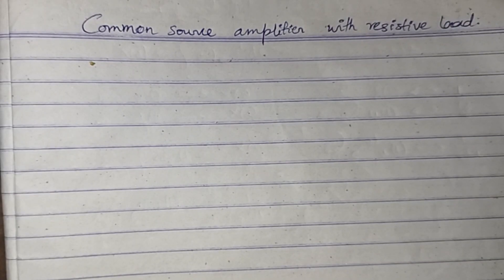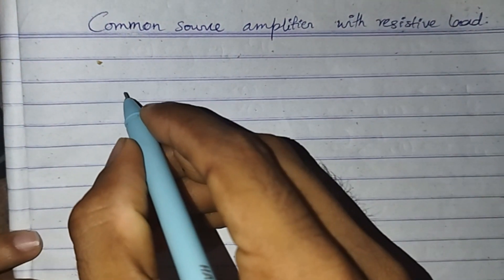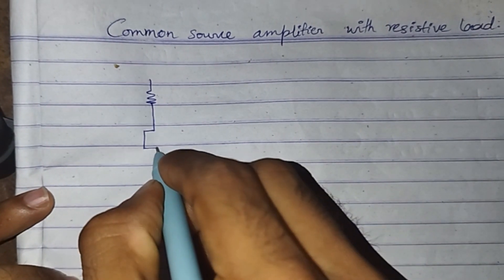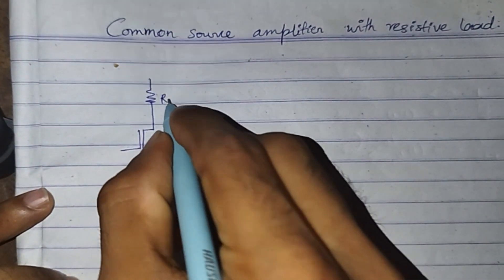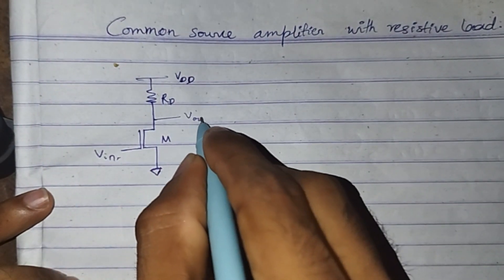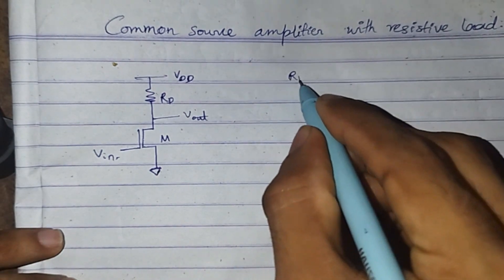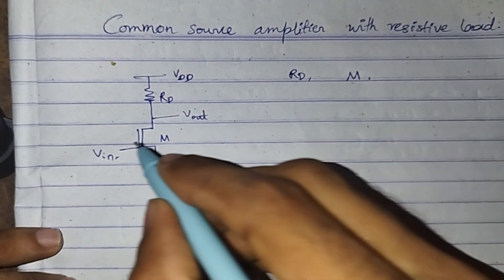Hello guys, welcome to our YouTube channel. In this video we are going to learn about the common source amplifier with resistive load. In this circuit we have a resistor RD and an amplifying device M, and the input is connected to the gate of the transistor.